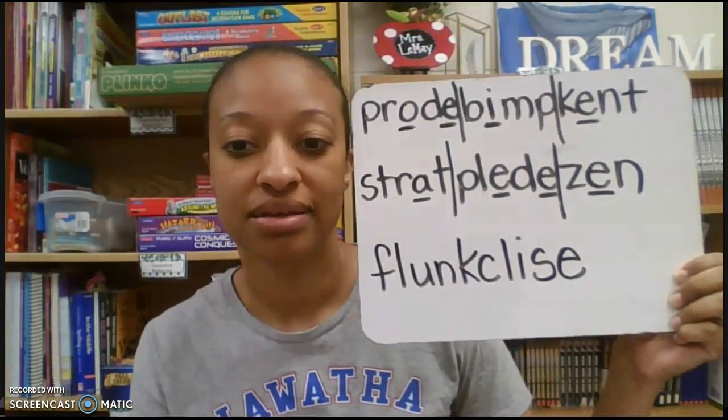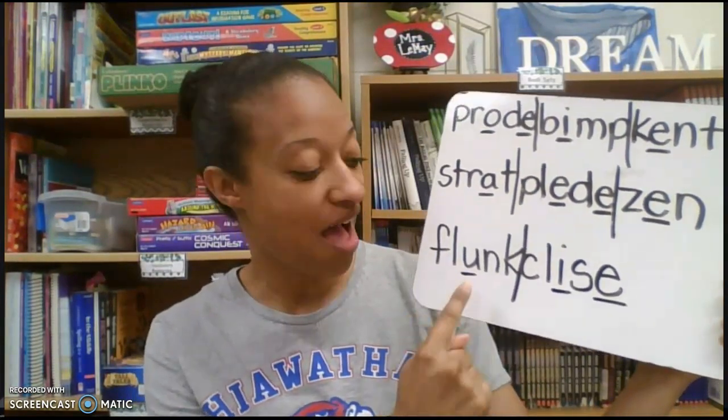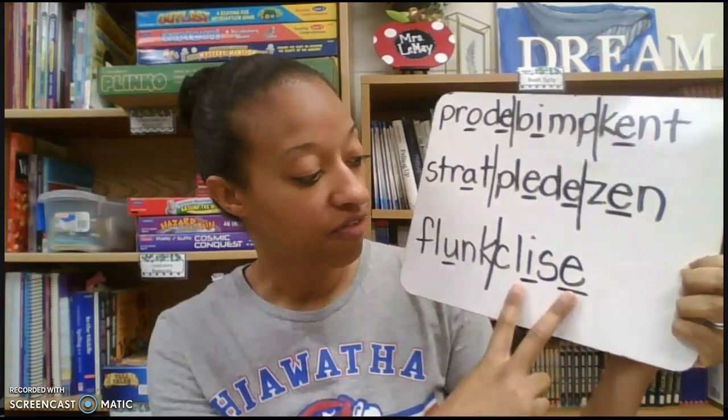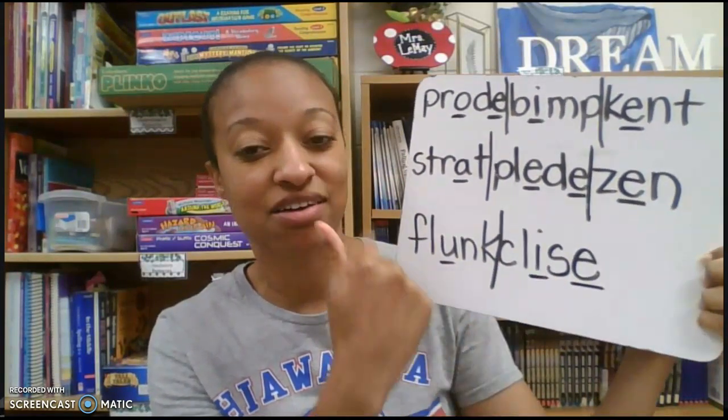Okay, last word: F-L-U-N-K-C-L-I-S-E. Make sure your word is spelled correctly. Once again, mark your vowels, divide your word, go for it. Should look like this. First syllable: closed — Flunk. Long vowel silent E: I — Clise. Whole word: Flunk-Clise.